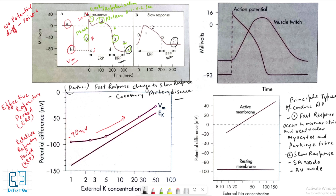In slow response cardiac tissue, the action potential is propagated more slowly than in fast response tissue. In addition, conduction is more likely to be blocked in slow response cardiac tissue. Slow conduction and a tendency toward conduction block increase the likelihood of rhythm disturbances.